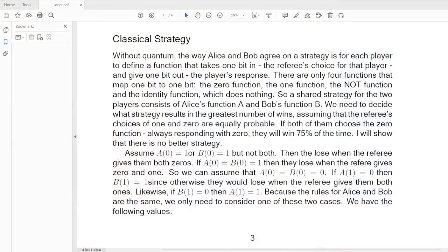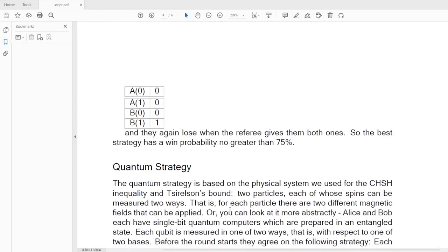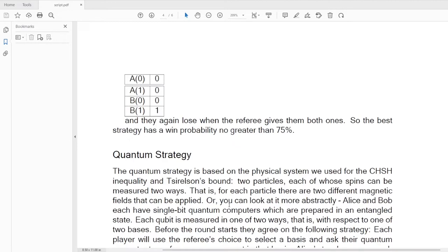We have the following values. And they lose again when the referee gives them both ones. So the best strategy has a win probability no greater than 75%.